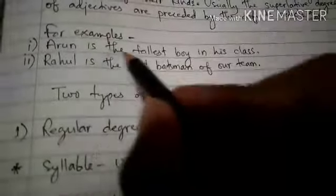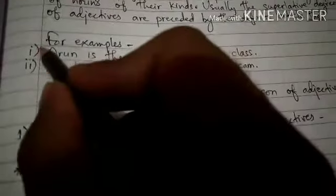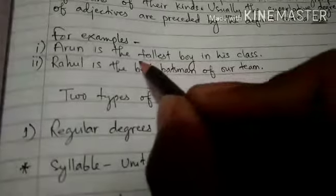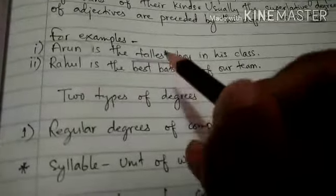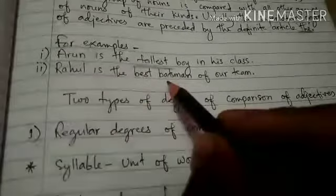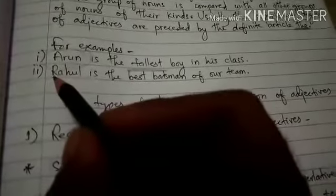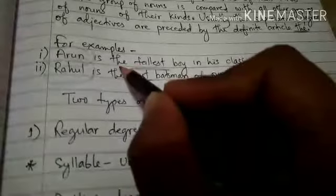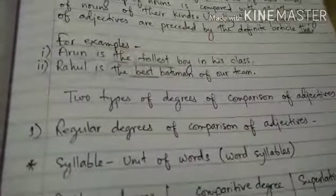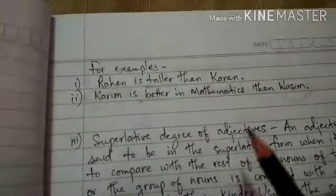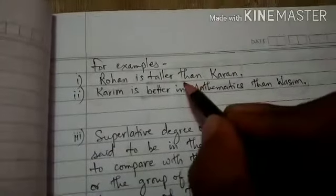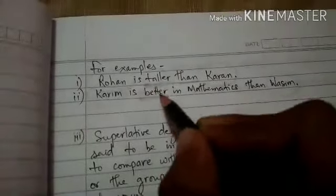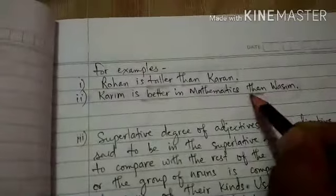For example, 'Arun is the tallest boy in his class.' Here Arun is being compared with the other boys of his class, and among all of them, Arun is the tallest. 'Rahul is the best batsman of our team' — we have many batsmen in the team, but among all of them, Rahul is the best. 'Best' is the superlative degree of adjective, and we see that the definite article 'the' is used. As in the comparative degree, the word 'than' is used after the adjective.